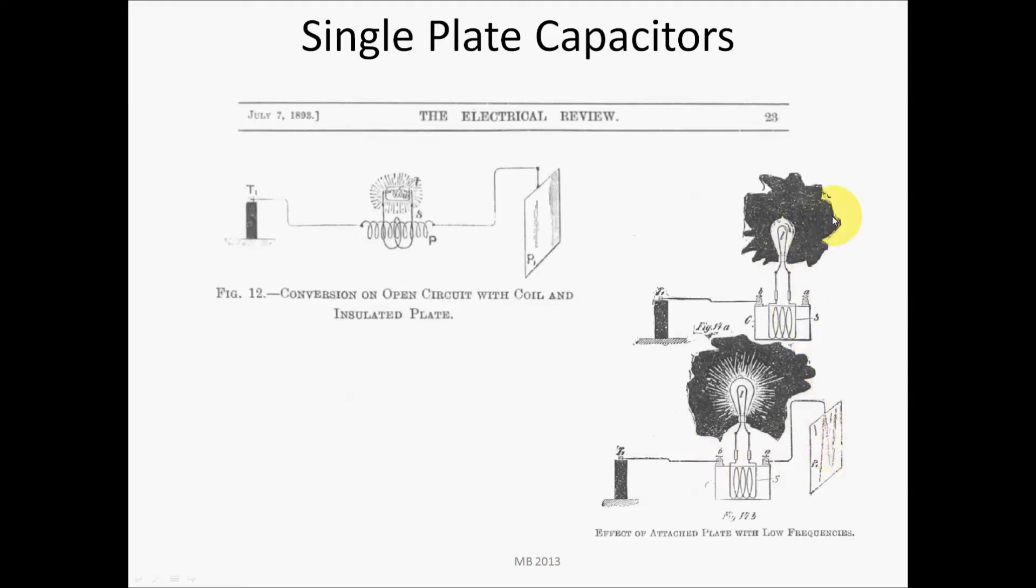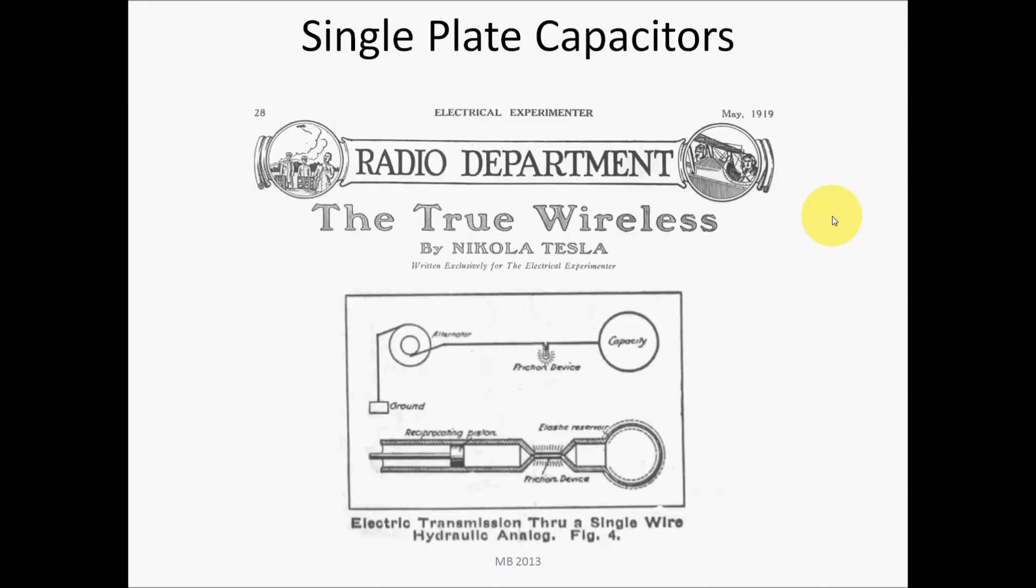So there's a couple illustrations from 1893. Here is an illustration from the Electrical Experimenter, 'The True Wireless' by Nikola Tesla. This is a graphic from his article and he was trying to describe the principle of a single plate, single terminal capacitance and how it could be used in the circuit.